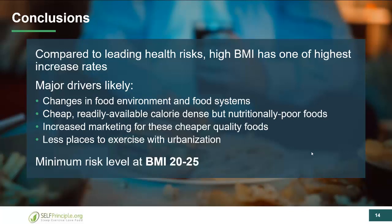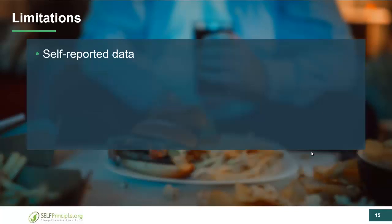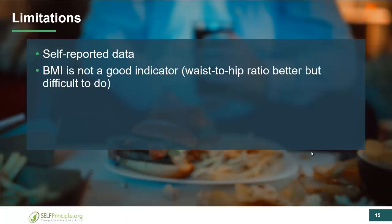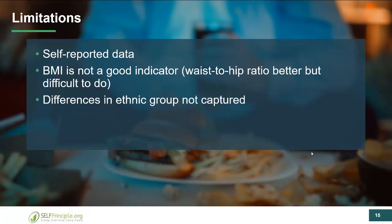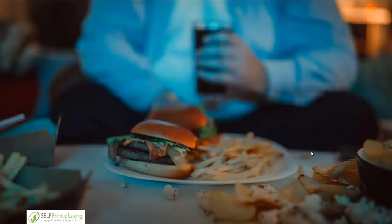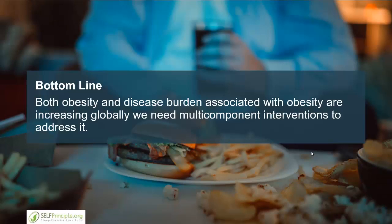The take-home message from this study is that the safest BMI — the minimum risk level — is around 20 to 25, which takes both weight and height into consideration. Limitations of the study include self-reported data, BMI being a weaker indicator than waist-to-hip ratios, differences within ethnic groups not fully captured, other potential confounders, and the fact that this wasn't designed to study causation. Bottom line: obesity and its disease burden are increasing, and there's no quick fix — it will take a multifactorial, multi-component intervention to address this epidemic.